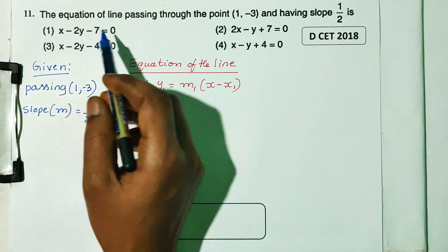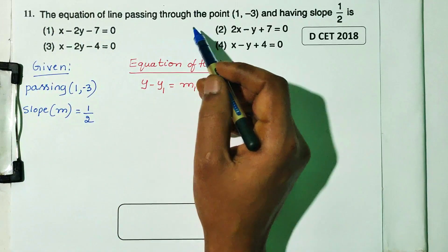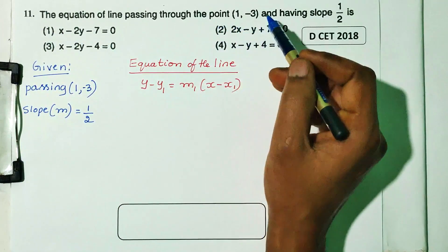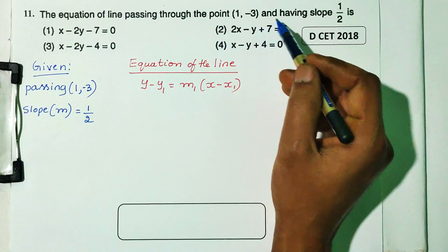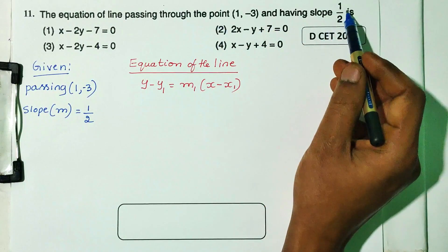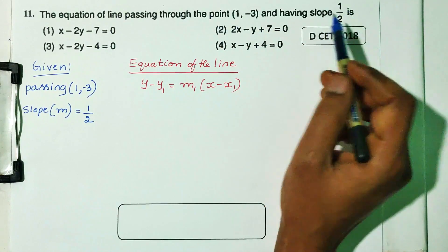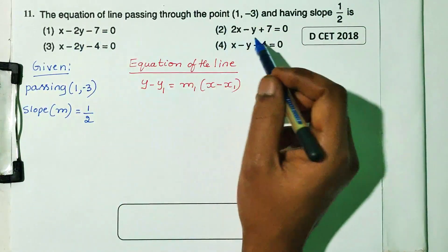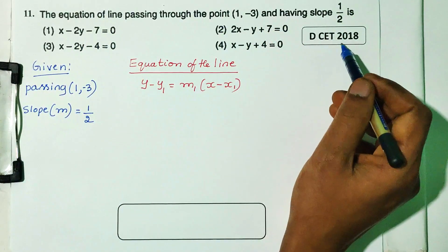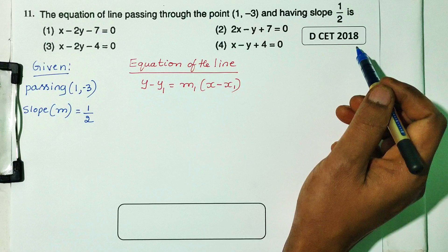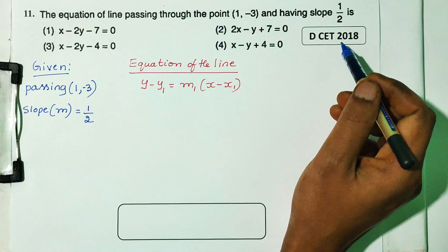Question number 11: the equation of line passing through the point (1, -3) and having slope 1/2. This is a DCT 2018 question.